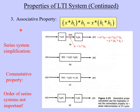There's another property that lets us do something different: the associative property. The associative property says that x convolution with h1 — in brackets — with the result then convolved with h2, is equal to x convolution with the convolution of h1 and h2 in brackets. In other words, where we put the brackets or parentheses doesn't matter in the convolution. The associative property works with other things too, like addition.